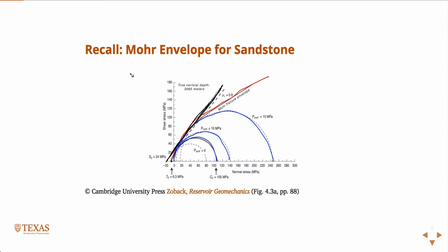What we talked about last week was that if we just linearize it — take the best fit straight line to all those tangent points — that's how we come up with the Mohr-Coulomb failure criterion. We like the linear because it's just a straight line. It's easy. We can fit it with two parameters: cohesion, which is essentially the y-intercept of that line, and internal friction, which is the slope of that line.